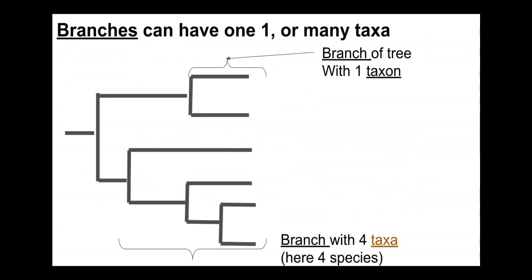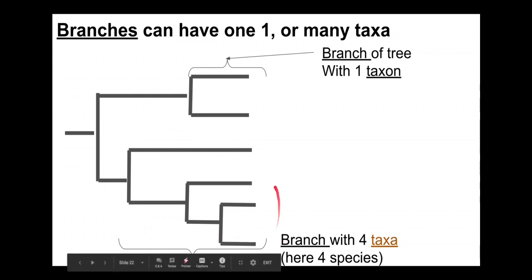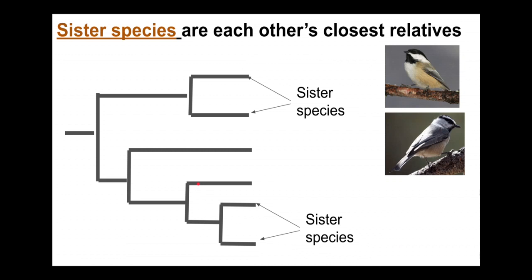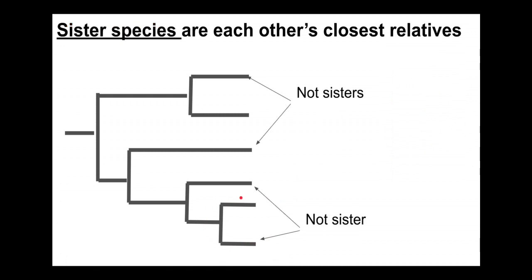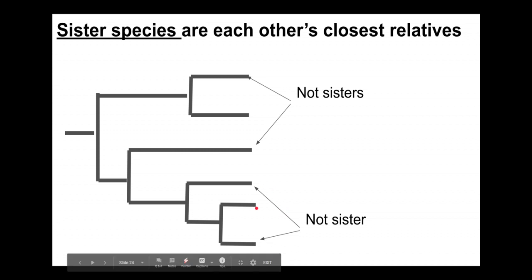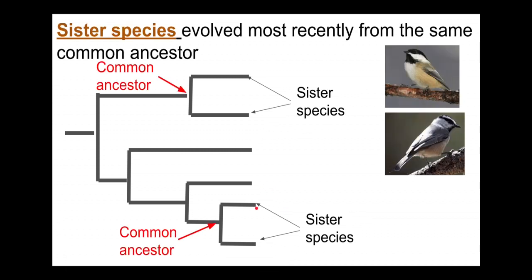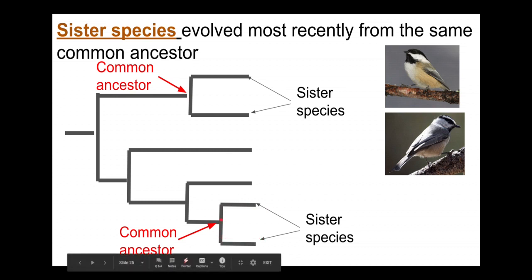Branches can have one or more taxa. Here is a branch which at its tip has a single taxon, the black-capped chickadee. You can also have a branch with multiple taxa — a branch composed of multiple sub-branches with four tips associated with it. Sister species are each other's closest relatives. Here we have two sister species, and here are also two sister species. A species is not a sister to another if there is a third species in between. Sister species evolved most recently from the same common ancestor, indicated by a shared node.